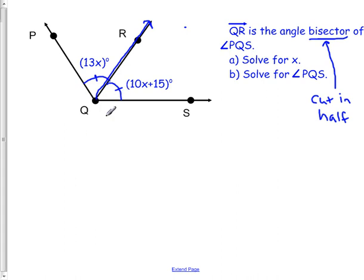That means that if these two angles are congruent, we can set up the equation and just write 13x equals 10x plus 15. So you're not adding them up and setting equal to some number, they're actually equal to each other. Okay, so let's solve this.